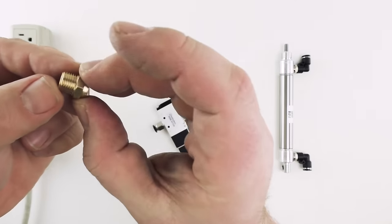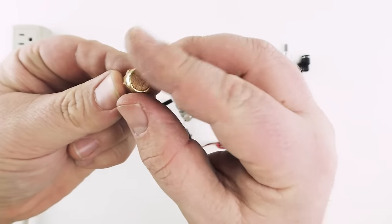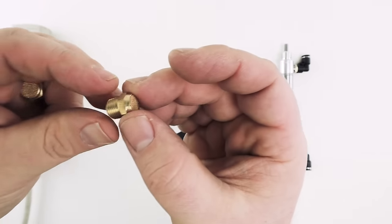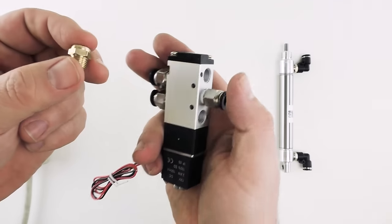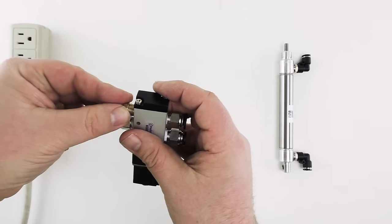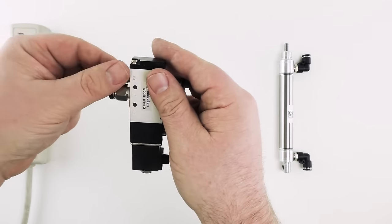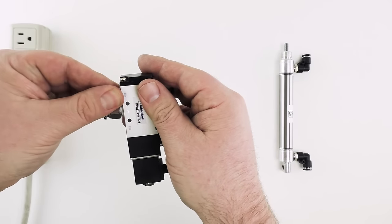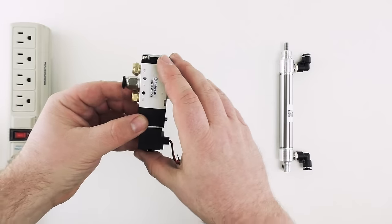You can see that these fittings are threaded on one side and they have a muffler on the other. The primary purpose of these is to block debris from entering into the exhaust ports of the cylinder but they also help to slightly muffle the sound of the exhaust. So we'll just go ahead and install these into the two ports marked EA and EB on the solenoid. Alright and that is our solenoid with all the fittings installed ready to go.